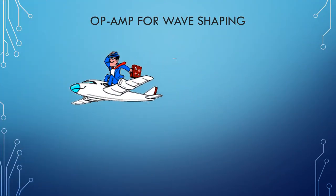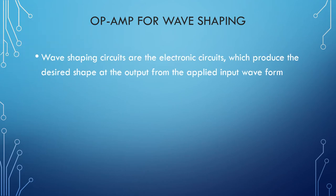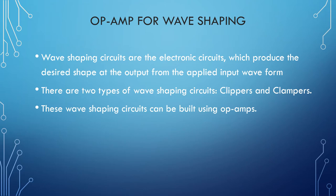So now let's dive into the actual topic — op-amp for wave shaping. Wave shaping circuits are electronic circuits which produce the desired shape at the output from the applied input waveform. There are two types of wave shaping circuits: they are called clippers and clampers. These wave shaping circuits can be built using op-amps, and today we are going to see how to build these clippers and clampers using op-amps.